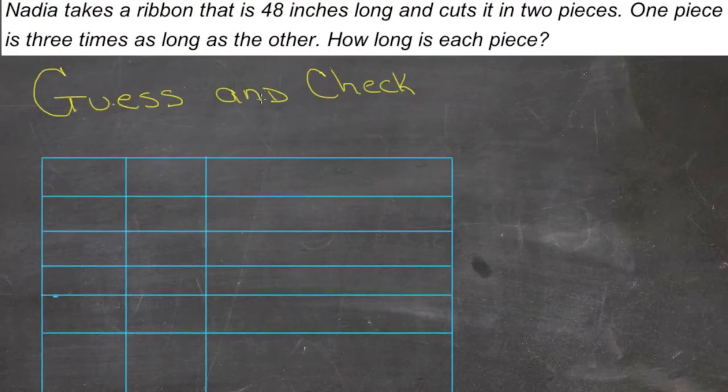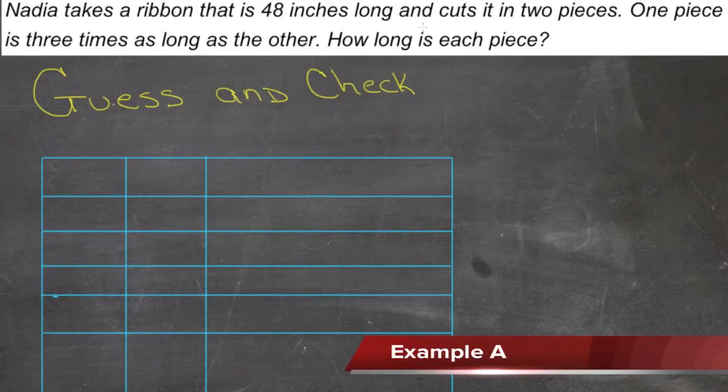We're going to solve this word problem using the guess and check method. Nadia takes a ribbon that is 48 inches long and she cuts it into two pieces. One piece is three times as long as the other. How long is each piece?